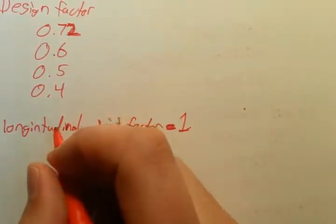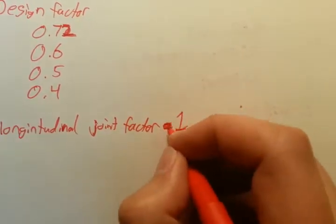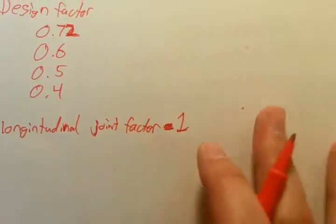Older pipelines, some of them are made from cast iron, and that's when you have to worry about that longitudinal joint factor. For new pipe, it's pretty much always going to be one.